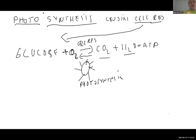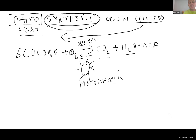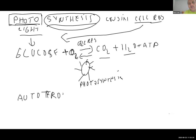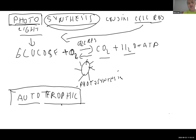Breaking down the word: photo means light, synthesis means you make or produce something. So you use the light to produce glucose. This process — photosynthesis — is autotrophic. Trophic means food level; auto means on its own. So basically, plants make their own food. That's why the process is autotrophic.